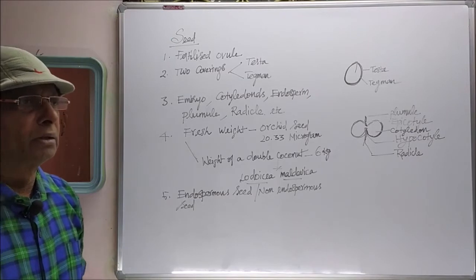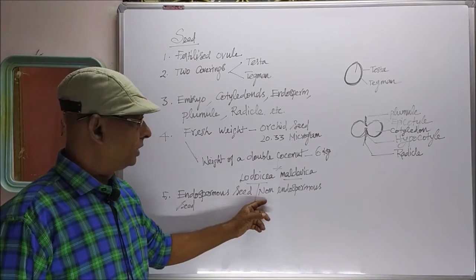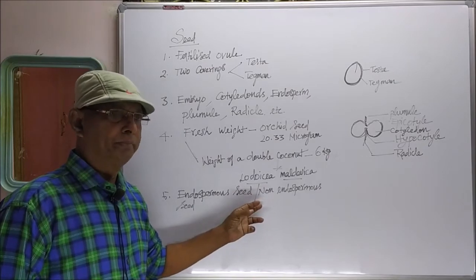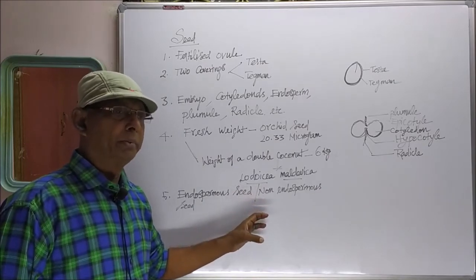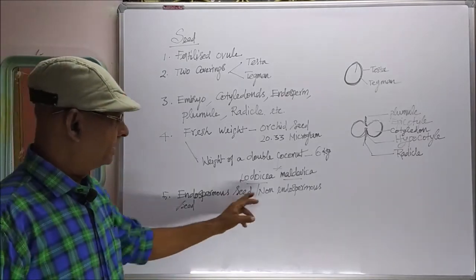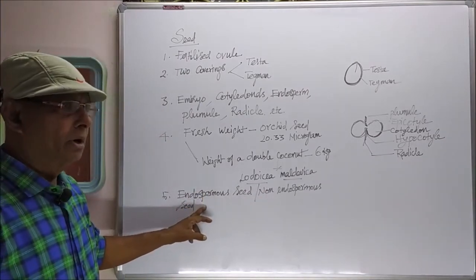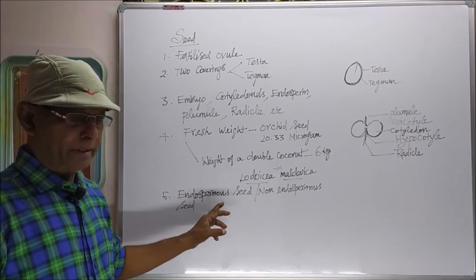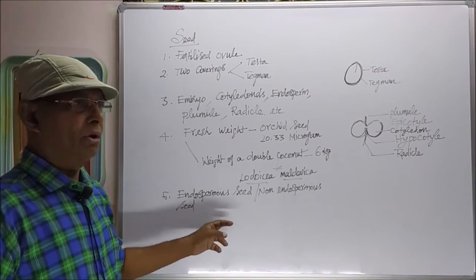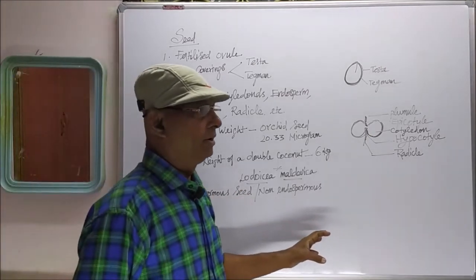Endosperm supplies food to the developing embryo. But in non-endospermous seed, food materials are stored in the cotyledons, not in the endosperm. The cotyledons store and supply food materials to the developing embryo. Endospermous seeds are otherwise called albuminous seeds. Non-endospermous seeds are otherwise called exalbuminous seeds.